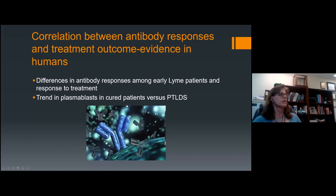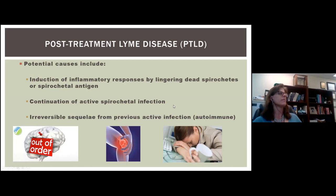There has also been a correlation between antibody responses and treatment outcome in humans. We looked at antibody responses among Lyme patients and their response to treatment, and another group looked at plasmablasts in cured patients versus those with post-treatment Lyme disease. Post-treatment Lyme disease is the occurrence of continued symptoms after the recommended course of antibiotic treatment. It could be caused by inflammatory responses from lingering dead spirochetes or antigen, continuation of active spirochetal infection, or an autoimmune mechanism — possibly all playing in concert.